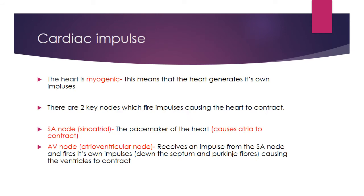Cardiac impulse keywords: The heart is myogenic, meaning it generates its own impulses, so the SA node will always continue to fire regardless of whether we are at rest or exercising. The SA node — the pacemaker of the heart — causes the atria to contract, and at the same time sends an impulse to the AV node. Once the AV node receives that impulse it fires its own impulse down the septum, through the bundle of His, and along the Purkinje fibers, causing the ventricles to contract and forcing blood out either to the rest of the body or to the lungs.